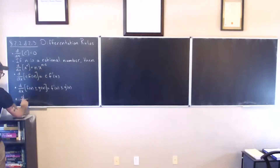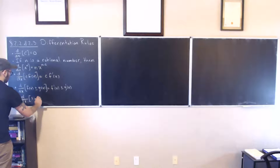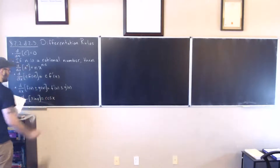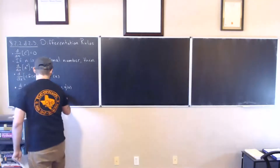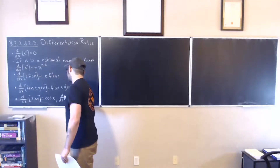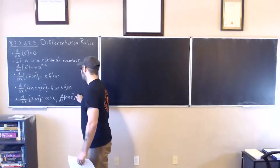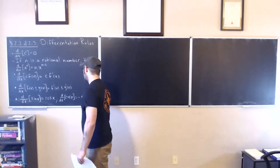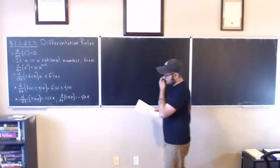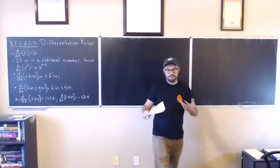Finally, two more rules: the derivative with respect to x of sine of x equals cosine of x, and the derivative with respect to x of cosine of x equals negative sine of x. These are the basic rules of differentiating differentiable functions.